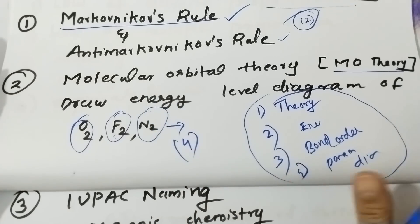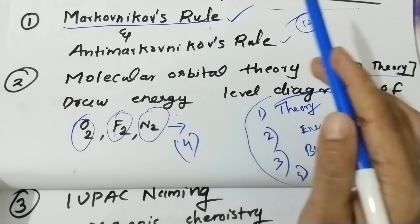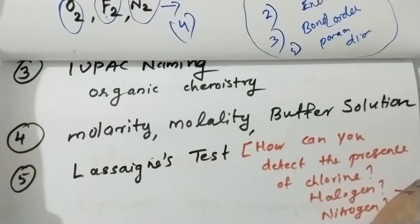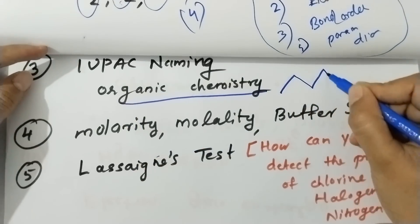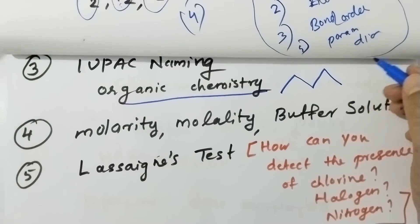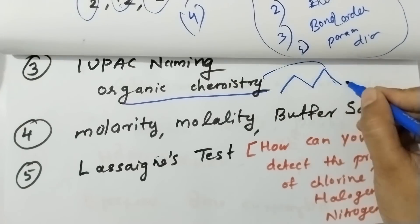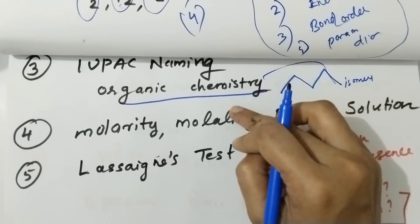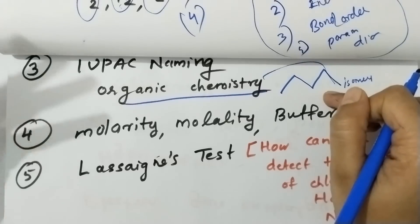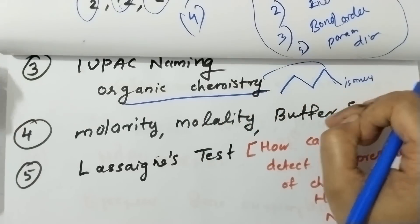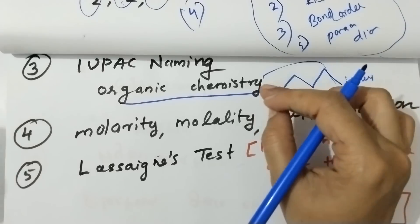This is Molecular Orbital Theory, which is the fourth chapter. Next is the IUPAC naming — it's called organic chemistry. Topics include bond line structure, IUPAC naming, and isomers. This is organic chemistry; IUPAC naming is the key focus here.